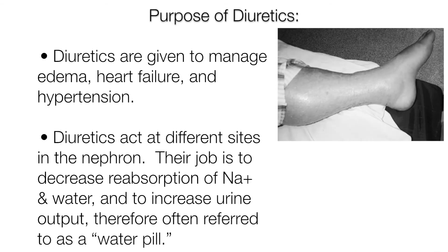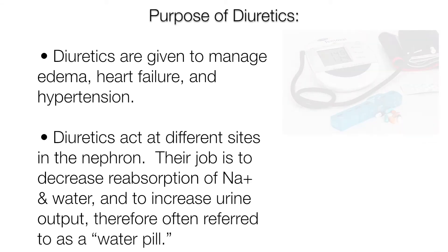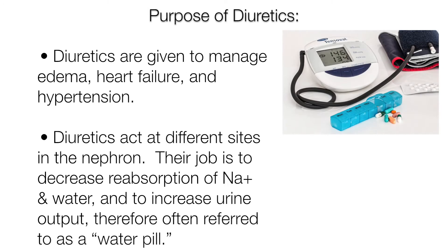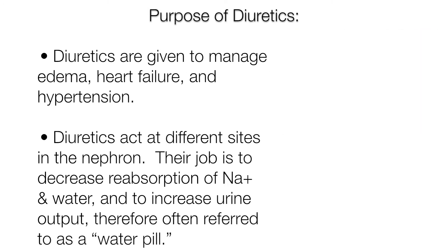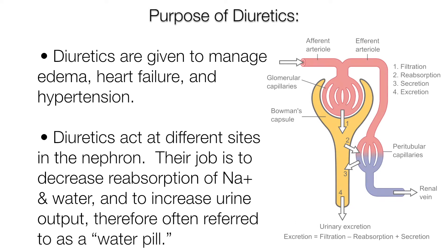Diuretics are drugs that increase the excretion of water, sodium, and other electrolytes through the kidneys, thereby increasing urine formation and output. Diuretics are given to manage edema, heart failure, and hypertension. Diuretics act at different sites in the nephron — their job is to decrease reabsorption of sodium and water and to increase urine output, which is why they are often referred to as a water pill.